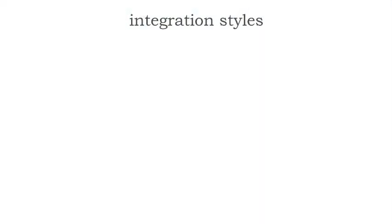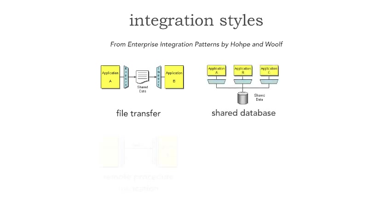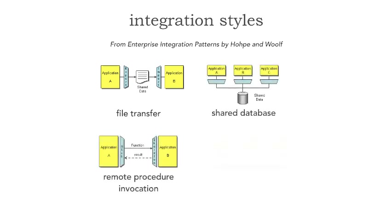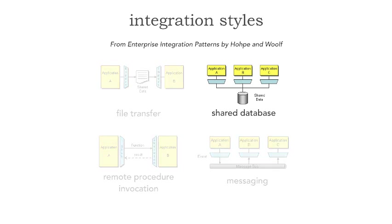As we saw in the last lesson, in the book Enterprise Integration Patterns by Gregor Hope and Bobby Wolf, they have identified four main patterns or styles of integration: file transfer, shared database, remote procedure invocation, and finally, messaging. In lesson 19, the prior lesson, we took a look at file transfer and the pros and cons. In this lesson, lesson 20, we'll take a look at the shared database integration style.